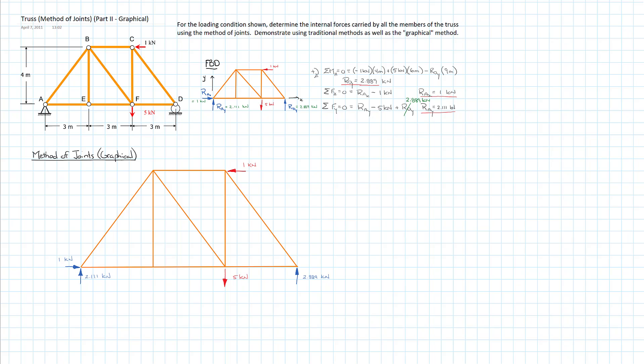I'm going to show you the method of joints, I call it the graphical method. It really is just a note-taking shortcut. I've resolved for the external reactions. You have to do the outside before you look in. Now I've drawn out my free body diagram again in large-scale because I want to be able to use it as the note-taking backdrop for the method of joints moving through my truss one side to the other.